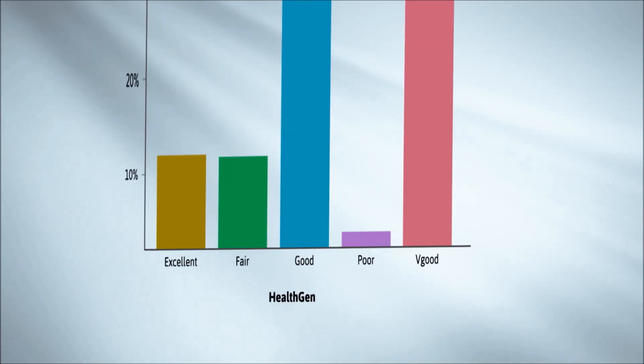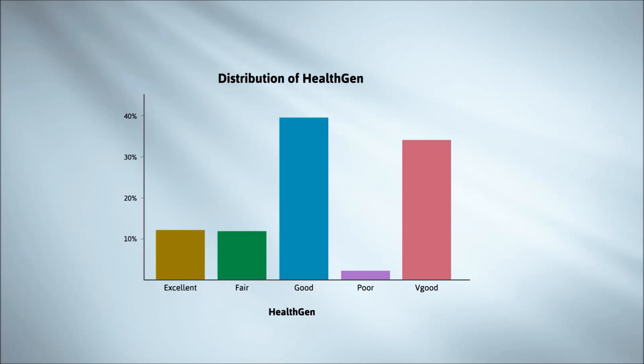This is the NHANES variable, HealthGen. It's a self-reporting of the person's general state of health.